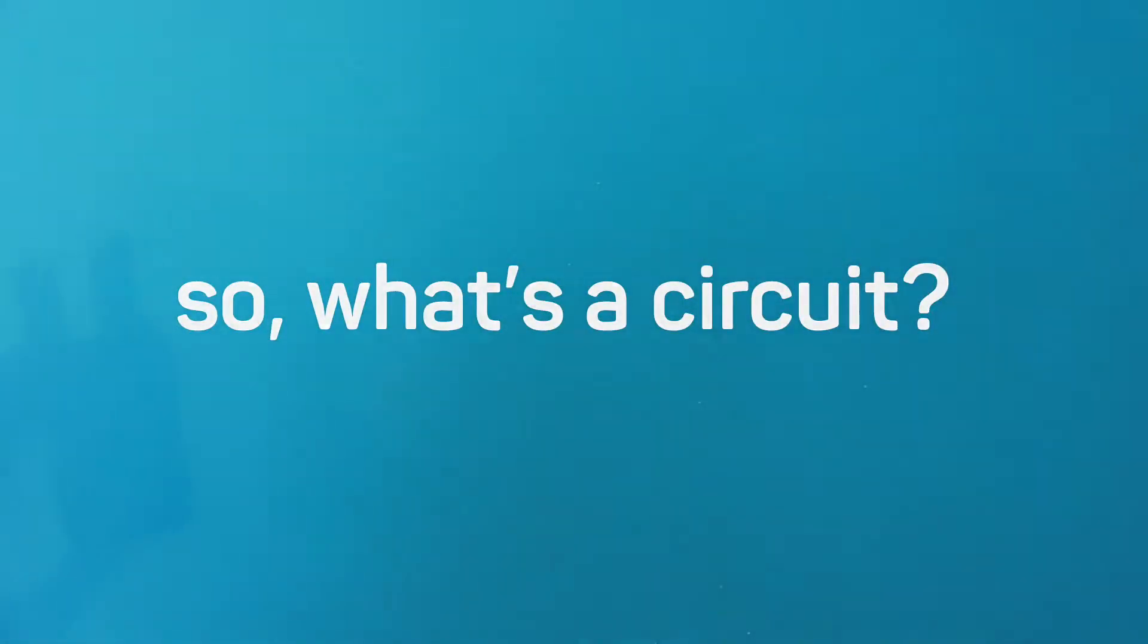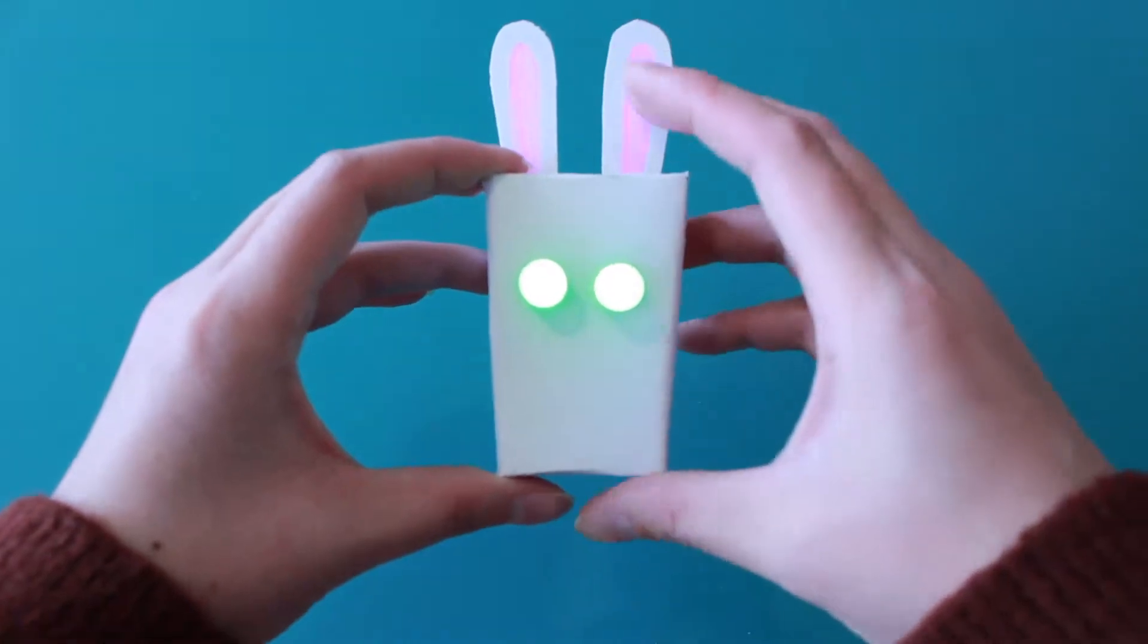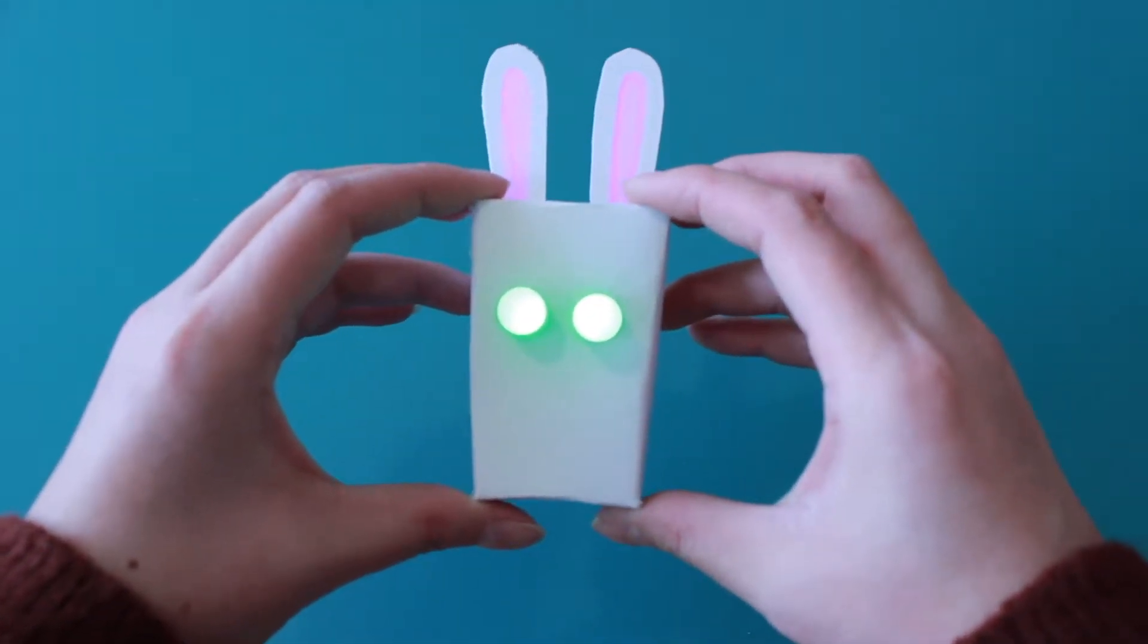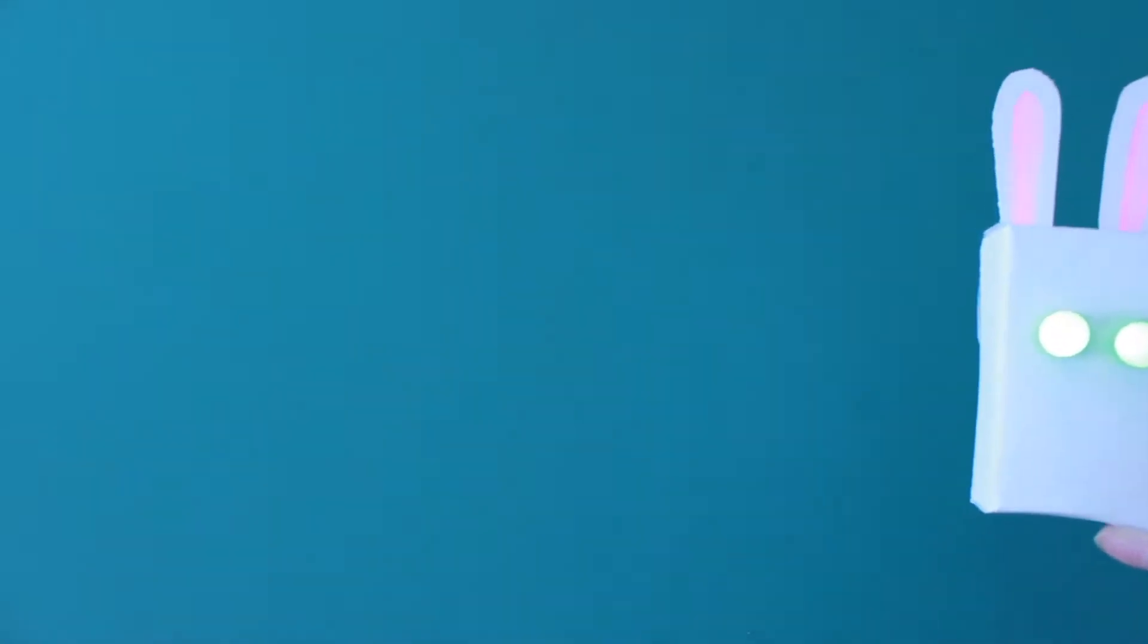So what's a circuit? A circuit is a path in which electricity flows. We're going to show you how to use a coin cell battery and copper tape to create a circuit that lights up your paper robot's LED eyes.